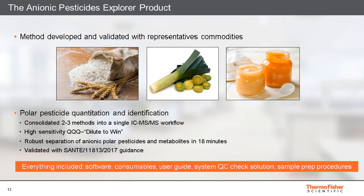The method has been developed with representative commodities: wheat flour as an example of a dry commodity, leek for high pigment content, and baby food (fruit-based) as an example of a challenging matrix. All validation has been done using European SANTE regulatory guidelines. The method consolidates the determination of polar and ionic pesticides into a single analysis, increasing productivity and reducing cost.